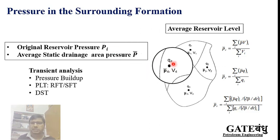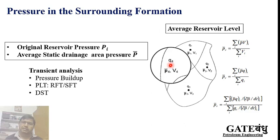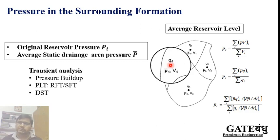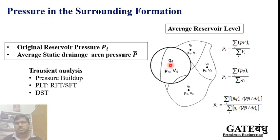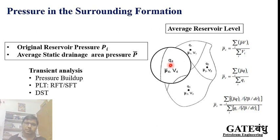Otherwise we will get the average static drainage area pressure, denoted by p-bar. When we estimate this p-bar for a particular well, it can similarly be estimated for different wells and averaged out volumetrically, by quantity of production, by production rate, or by area — different kinds of weighted methods are available. For reservoir management, this average reservoir-level pressure is more important than individual well pressure, but for well-to-well production maintenance, the average pressure at each particular well is very important.